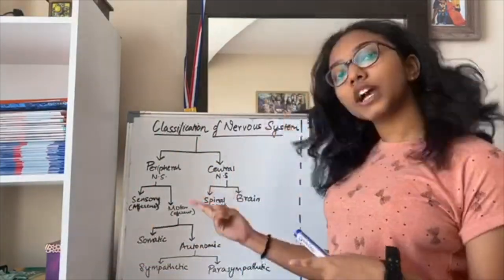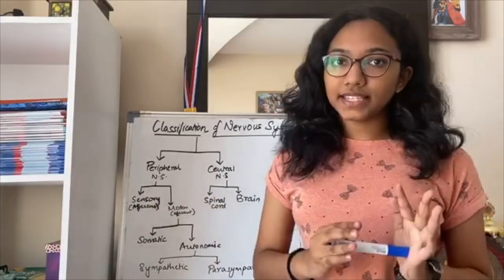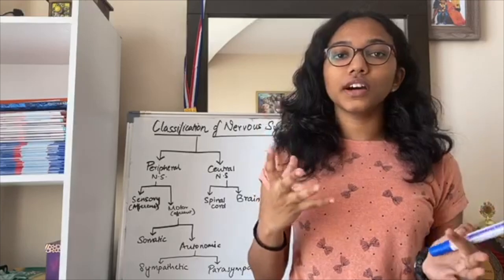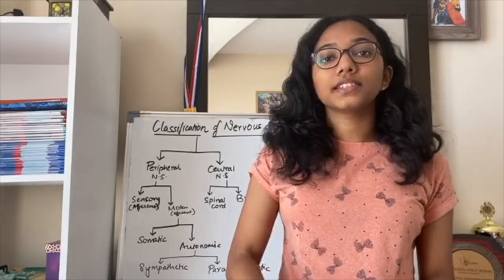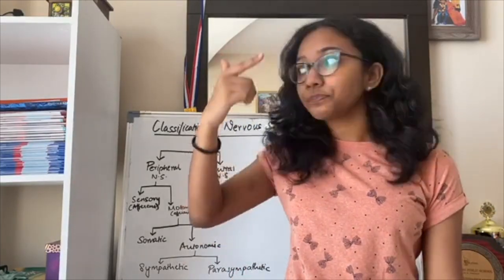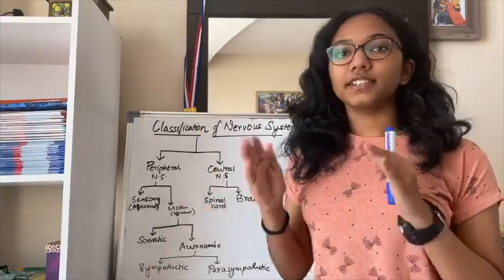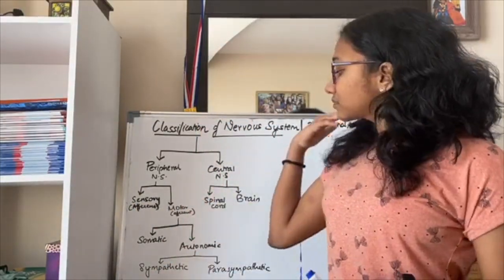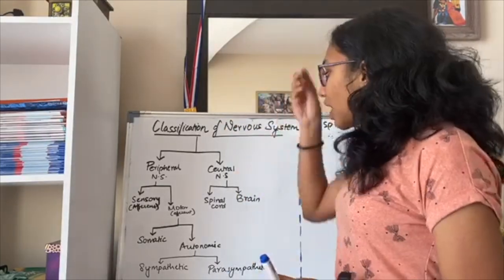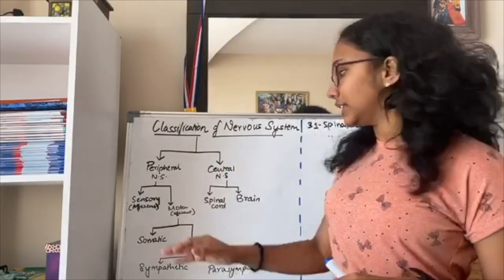There are two kinds of nerves: sensory and motor. Sensory nerves, as the name suggests, collect nervous impulses from different parts of the body and send the signal to your brain. Motor nerves, also called efferent nerves, send the signal from your brain to different parts of the body.